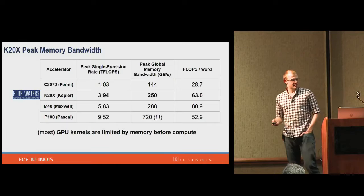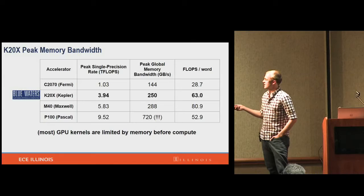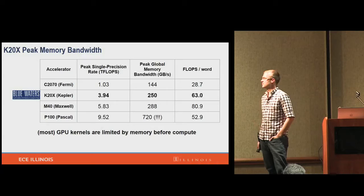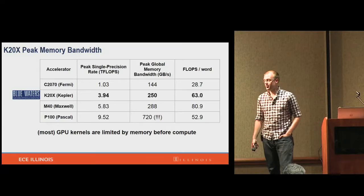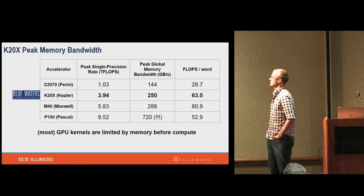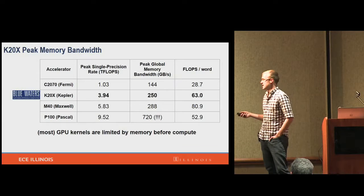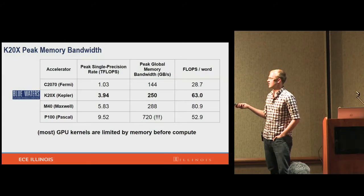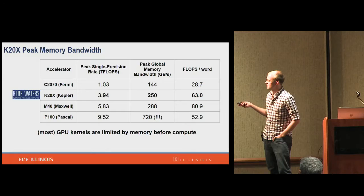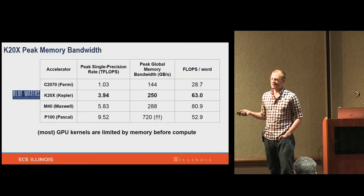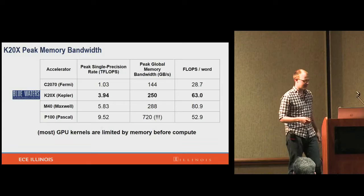To motivate the memory bandwidth problem: the K20X, which is what Blue Waters has, has a single-precision floating point rate of almost 4 teraflops, but only 250 gigabytes per second of global memory bandwidth. To fully utilize both, you'd need to do about 63 flops per word moved from memory — very difficult for most applications. So many applications end up being memory bandwidth bound. With Pascal, memory technologies changed significantly, improving this somewhat, but it's still relevant context for future NVIDIA-based systems.